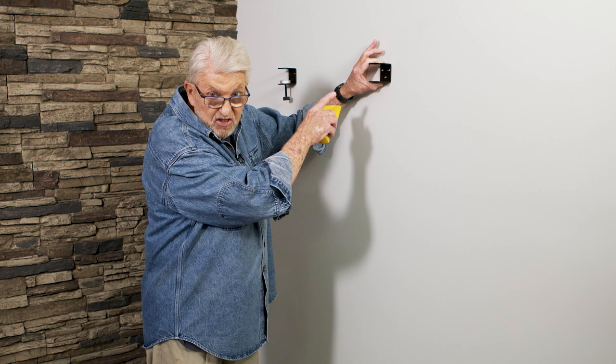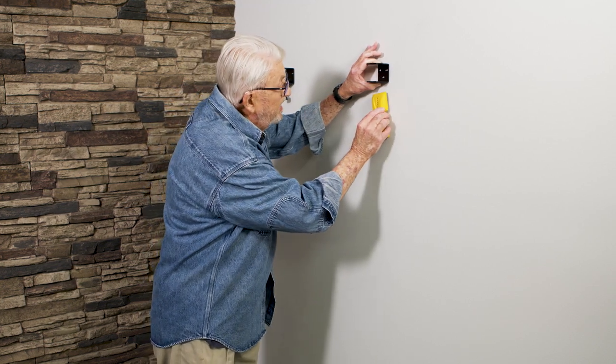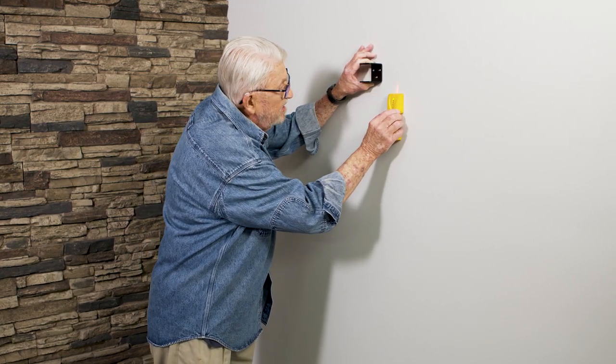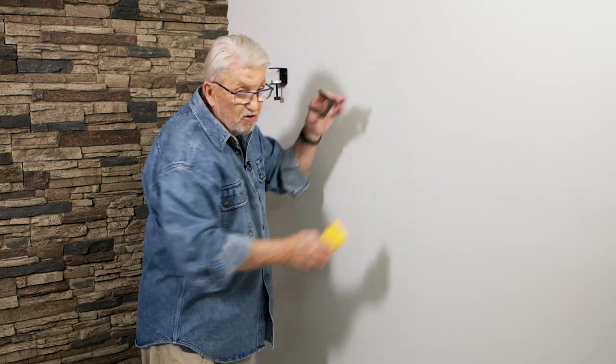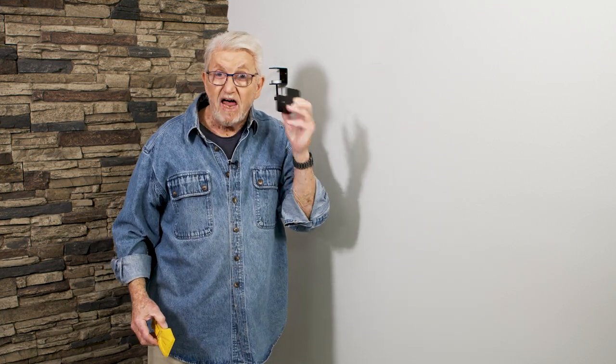Now I want to mount the second bracket here, which is fine, except that the stud is over here. So for this, I'm going to have to use hollow wall anchors.